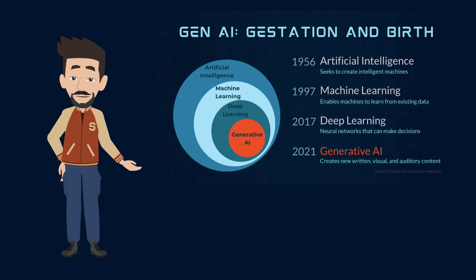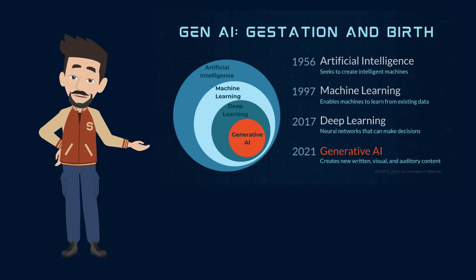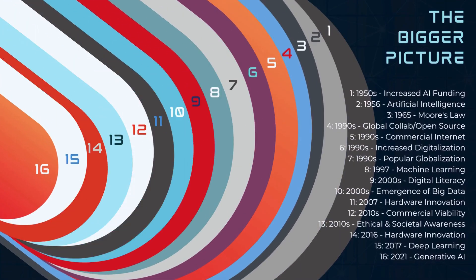Just for you to know, this Gen AI timeline you're seeing is a very simplified one. Here is a slide with the bigger picture. As you can see, everything started in the 50s with increasing funding for AI. Then, in the 90s, the explosion of the internet, increased digitalization, and globalization brought everything to a whole new level. Finally, some hardware advances, digital literacy, and commercial viability in the next decades created the foundation for today's Gen AI.